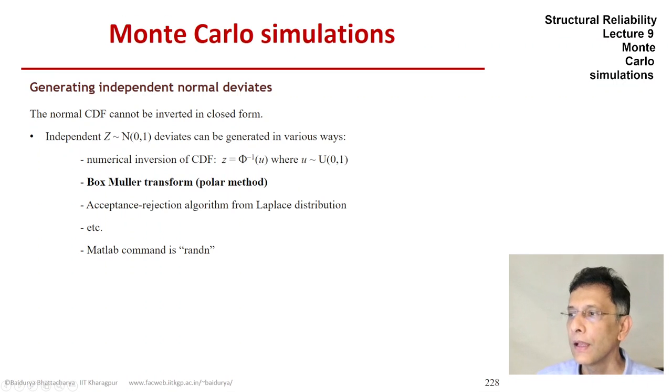In fact, the one that I'm going to discuss at length is the Box-Muller transform, also known as the polar method. There are efficient methods like acceptance-rejection technique from the Laplace distribution and a few others. The MATLAB command is randn, so if you type randn you get a standard normal deviate. I'm not sure what the algorithm behind randn is, but we are going to use it extensively in our simulation.